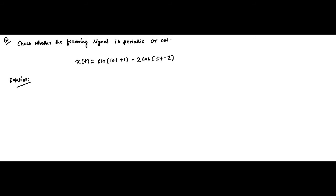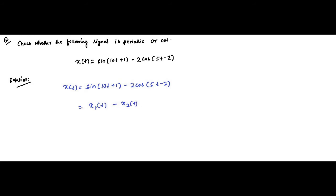Here is another question on sum of signals and we have to check whether the resultant signal is periodic or not, and if it is periodic, we have to find out its fundamental period. The signal is given by X(t) = sin(10t + 1) − 2cos(5t − 2), which is in the form X1(t) minus X2(t).